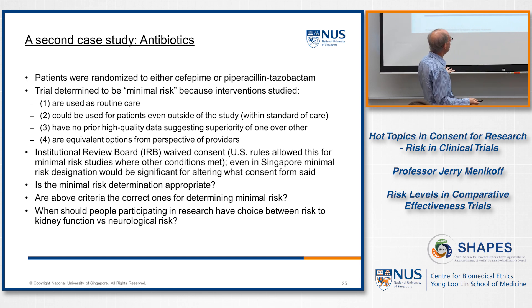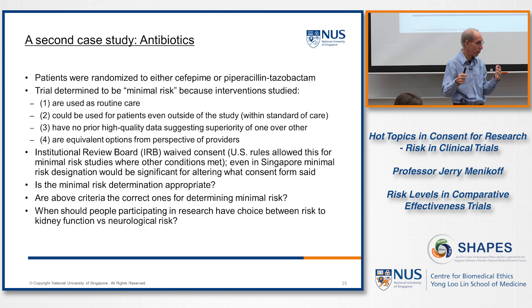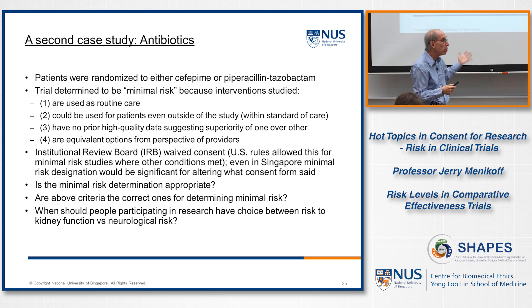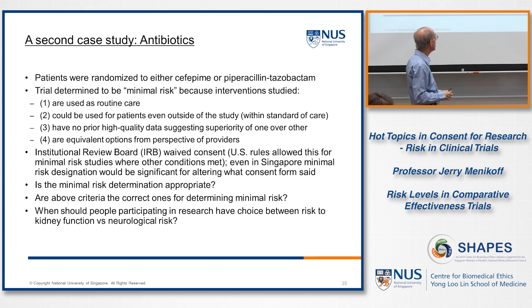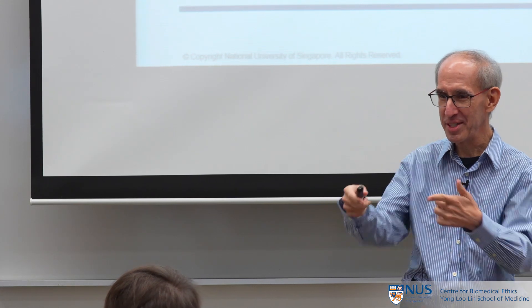The main takeaway is that important determinations are being made about comparative effectiveness trials—trials published in top journals like JAMA—declaring them minimal risk. Comparative effectiveness trials are very important and increasingly conducted around the world. The bottom line: just because every arm in a clinical trial is a version of standard care does not mean the two arms aren't very different from one another in terms of risk. There are interesting and unresolved issues relating to risk levels in comparative effectiveness trials, and with that we are ready for our panel discussion.